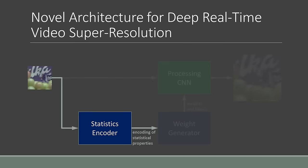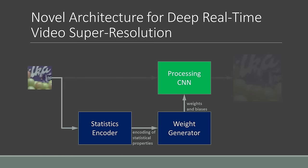The input image is fed into a statistics encoder CNN whose outputs are global properties of the frame. For super-resolution, this is mainly an encoding of the PSF deduced from the typical edge profiles visible in the image. The statistics are fed into a weight generator whose outputs are weights and biases for a small CNN which is used to process the video frame.